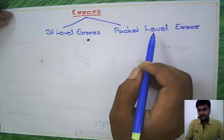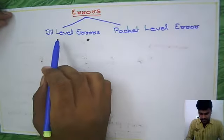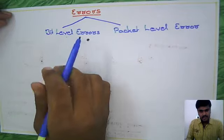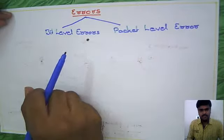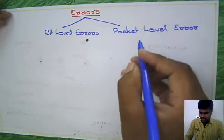Bit level means when you're sending data inside the packet, some bits are corrupted. Let's see these in detail.